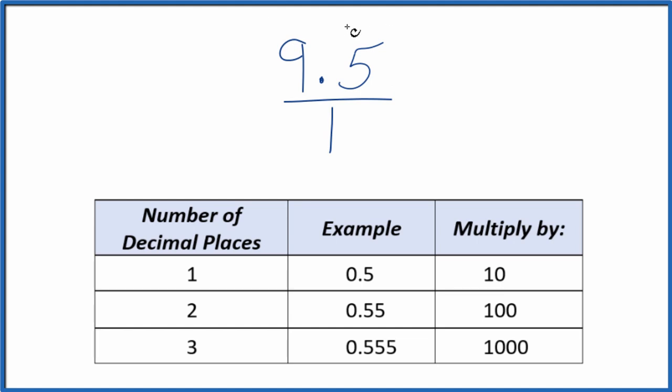But we need to get the numerator here now to be a whole number. And to do that, since we have just one decimal place, we're going to multiply by 10. So we take 10 times 9.5. That ends up giving us 95, and that's our whole number.